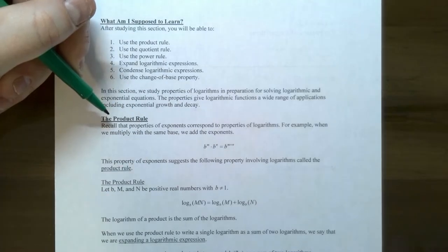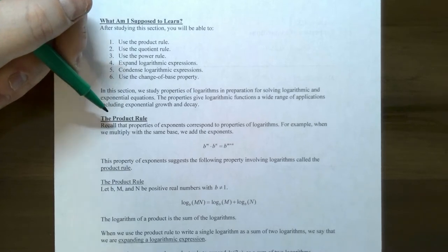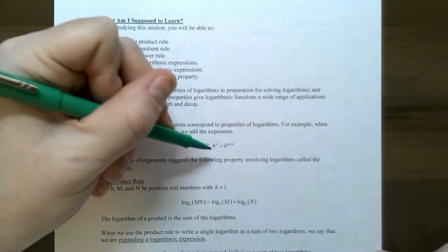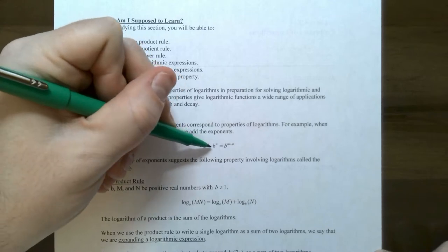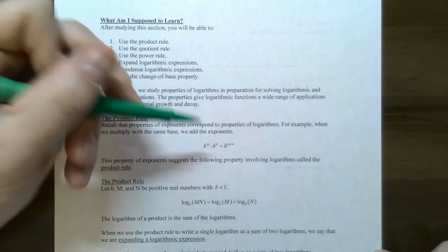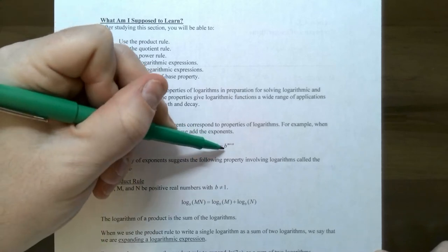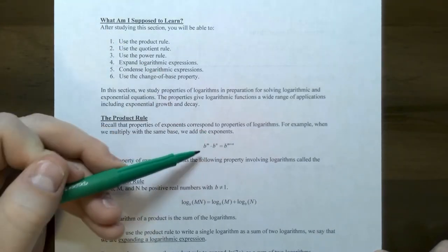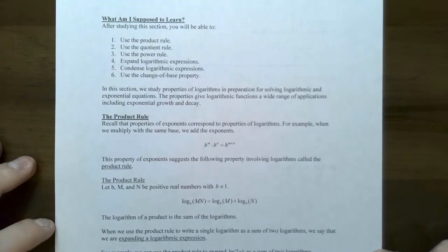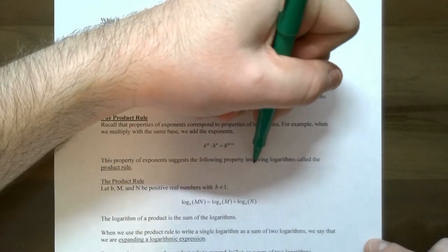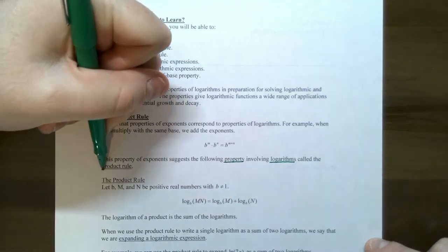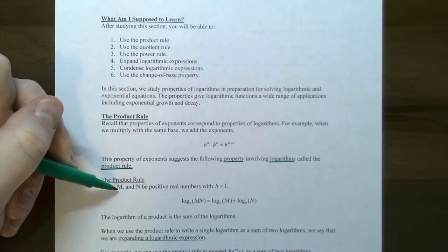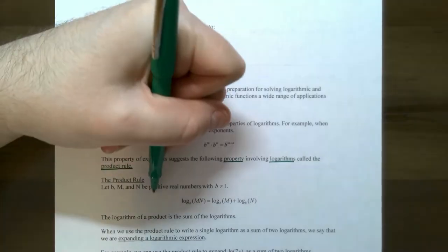The product rule comes from a rule involving exponents. The exponent rule states if you have base b raised to some power and base b raised to some other power, and you're multiplying these two exponential expressions together with the same base, you keep the base b and add the exponents. So when you multiply exponential expressions, you add the exponents if the bases are the same.